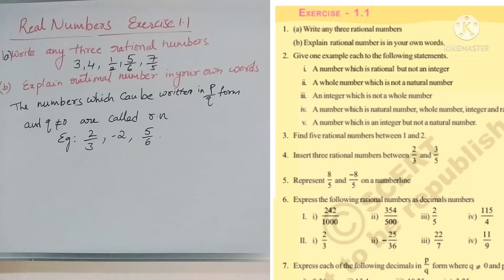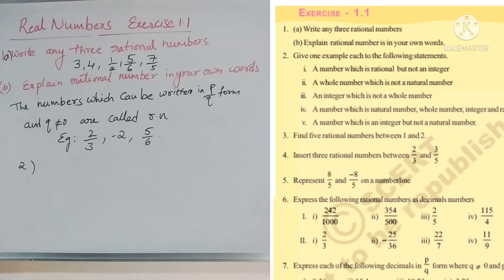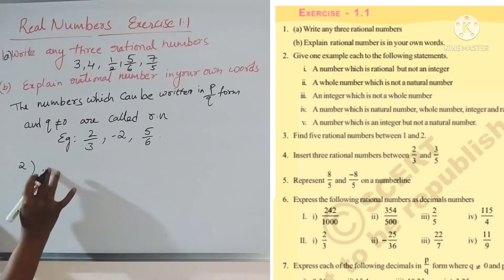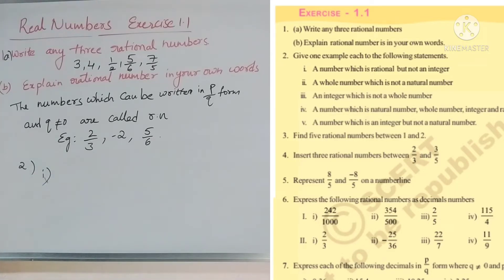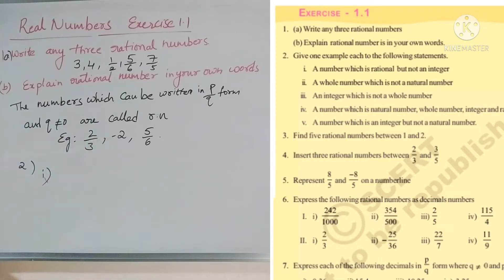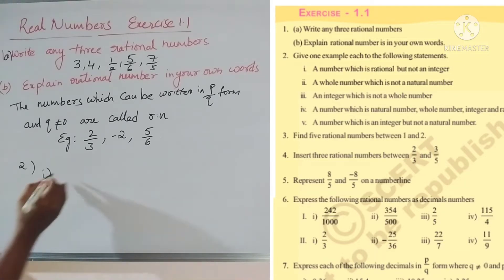Now in the second problem, they asked: give one example each to the following five statements. First statement: a number which is rational but not an integer. Rational numbers are in p by q form; integers include negative numbers, positive numbers, and zero. So a number that is rational but not an integer means all the fractions — you can write any fraction.